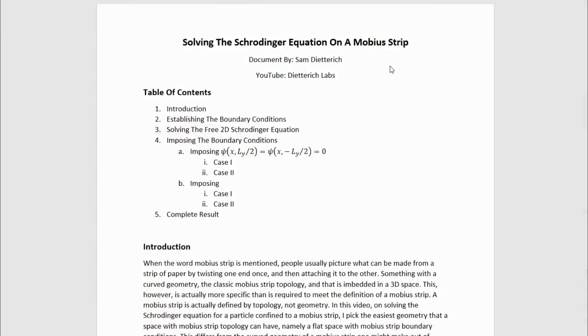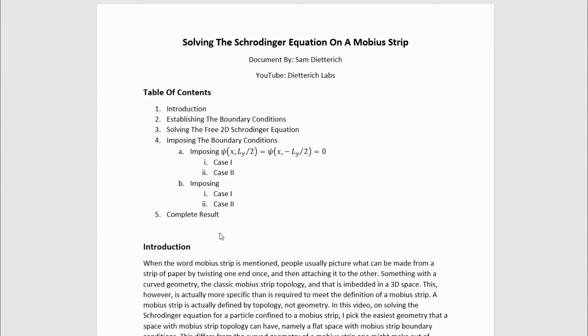And here's the video showing how to do that. How to solve the Schrodinger equation for a quantum particle on a Mobius strip. So let's get started with solving the Schrodinger equation on a Mobius strip. Here is a table of contents covering the breakdown of what I'm going to tell you. I'm going to have an introduction of the problem, establish the boundary conditions, solve the free Schrodinger equation, impose the boundary conditions in several steps, and then present the complete result at the end all put together.